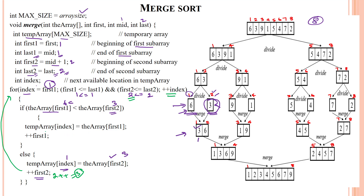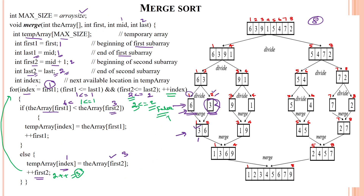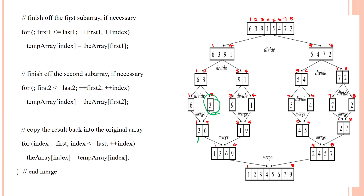Again in the for loop: first index 1 is less than or equal to 1 — condition is true. But the second array index is now 3, and 3 less than or equal to 2 is false — so condition is false. It comes out of the loop. As of now, only 3 has been placed in the temporary array, and 6 from the first subarray has not yet been placed.